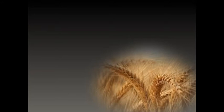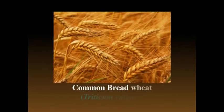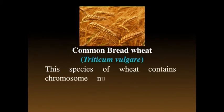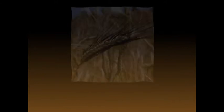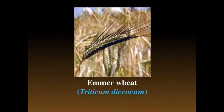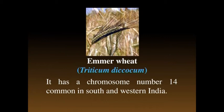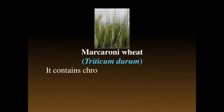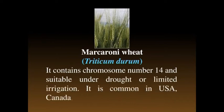Wheat is an annual cereal belonging to the Gramineae family and the genus Triticum. The classification of Indian wheat includes: (1) Common bread wheat, Triticum vulgare, with chromosome number 42, commonly grown in the Indo-Gangetic plains; (2) Emmer wheat, Triticum dicoccum, with chromosome number 14, common in south and western India; (3) Macaroni wheat, Triticum durum, with chromosome number 14, suitable under drought or limited irrigation, also common in the USA, Canada, and Russia.